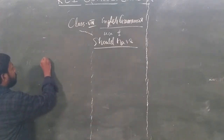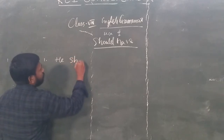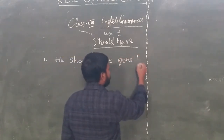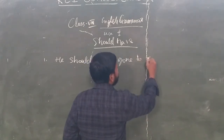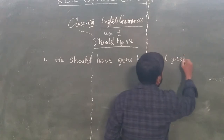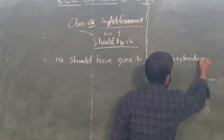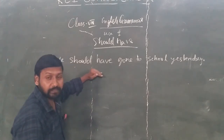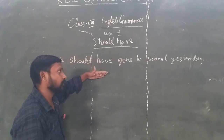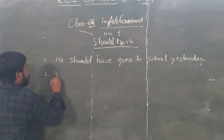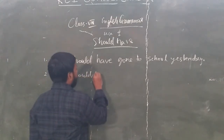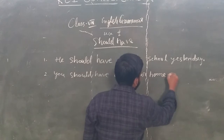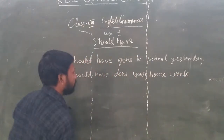Look at the board. For example: 'You should have gone to school yesterday.' This is giving advice to anyone. Similarly: 'You should have done your own work.' These are affirmative sentences using 'should have' to express advice about past actions.